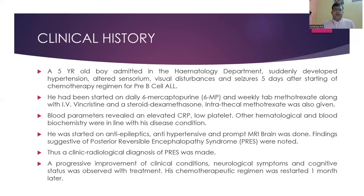He is a 5-year-old boy admitted in the hematology department who suddenly developed hypertension, altered sensorium, visual disturbances, and seizures 5 days after starting a chemotherapy regimen for pre-B cell ALL. His diagnosis of pre-B cell ALL was done by peripheral blood smear, bone marrow examination, and immunohistochemistry. He had been started on a regimen of daily 6-mercaptopurine and weekly tablet methotrexate along with IV vincristine and steroid dexamethasone. Intrathecal methotrexate was also given.